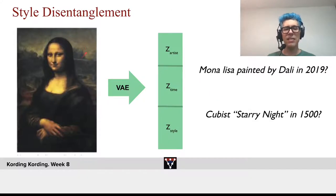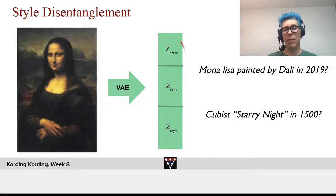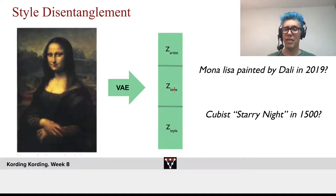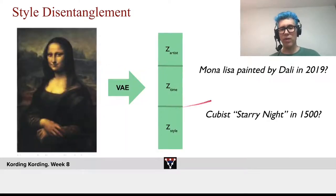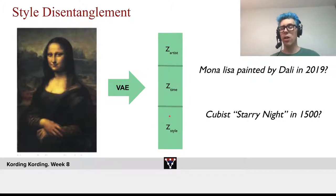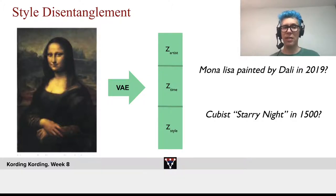We can use VAEs for something like style disentanglement, where we take an image into a VAE that maps it into a latent space. We can say we expect part of that latent space to tell us something about the artist, part of it about the time, and part of it about the style. That might allow us to learn about an artist's time and style. We'll have many different cost functions: one aimed at telling us something about the artist, about the time, about the style, and on top of that, how good we are at actually reconstructing the images.